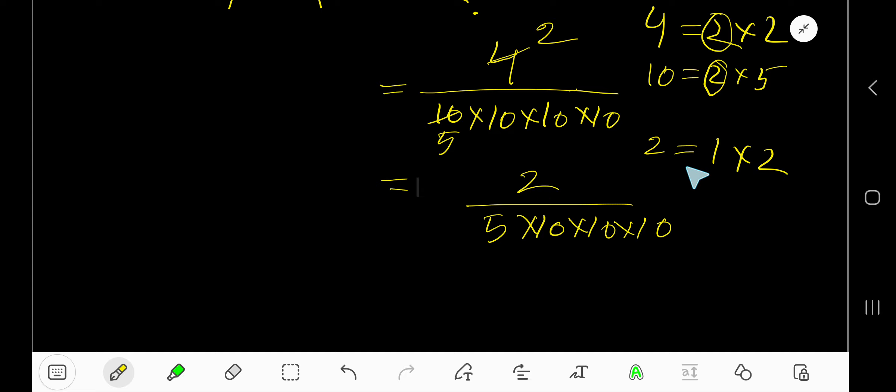The factor of 2 is 1 times 2, the factor of 10 is 2 times 5, so 2 is the common factor between 2 and 10. Divide this 2 by 2 and you get 1. Divide this 10 by 2 and you get 5.